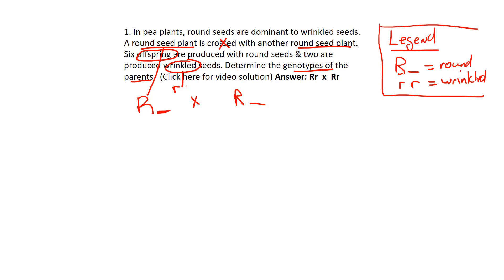And they do, they produce wrinkled offspring. That means these wrinkled offspring must have had a little r little r, two recessive alleles. Where did they come from? This is where we get to fill in the unknown parents. Each parent has to contribute allele to that offspring. So that means this parent must have received or donated one, and this parent must have donated the other recessive allele.